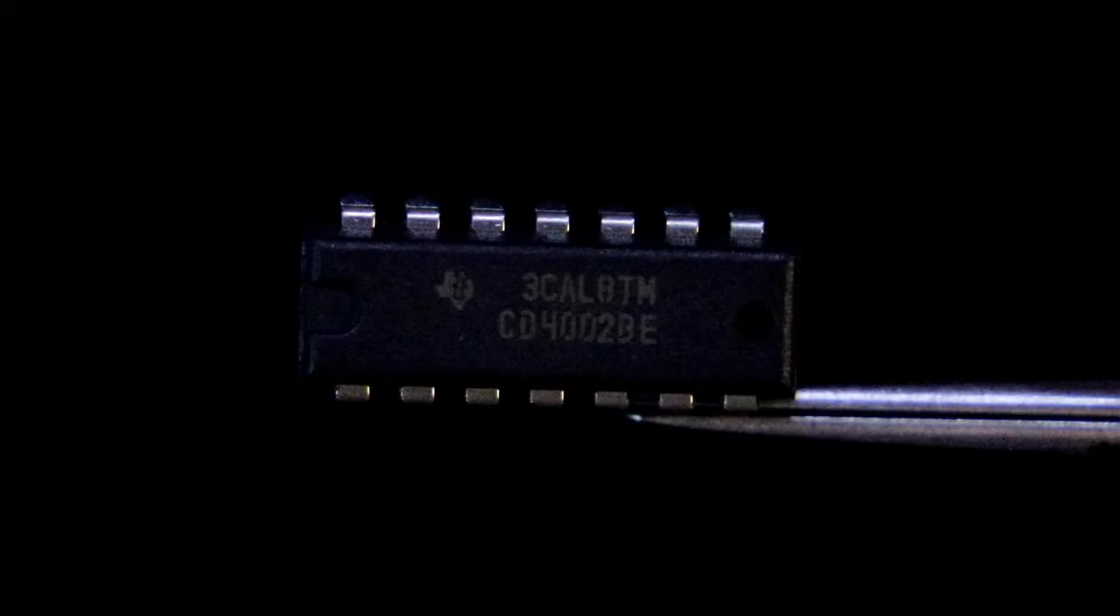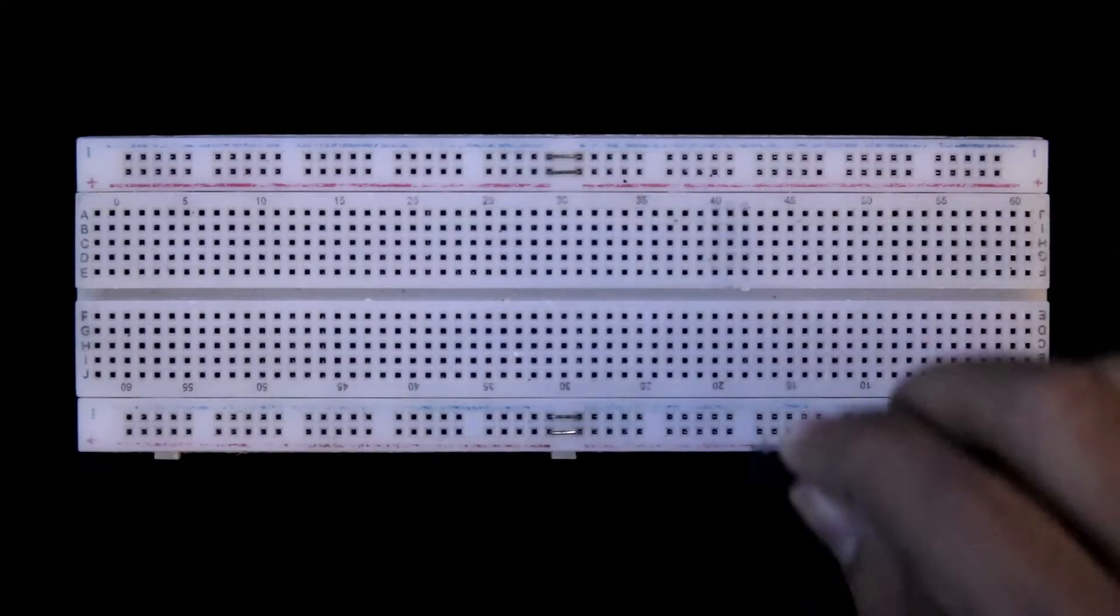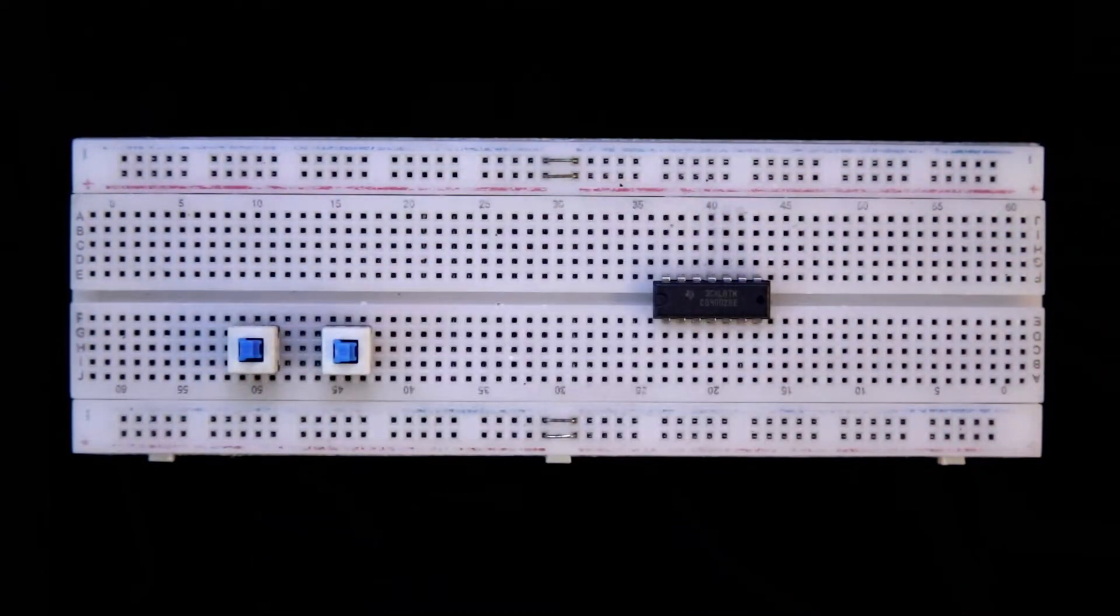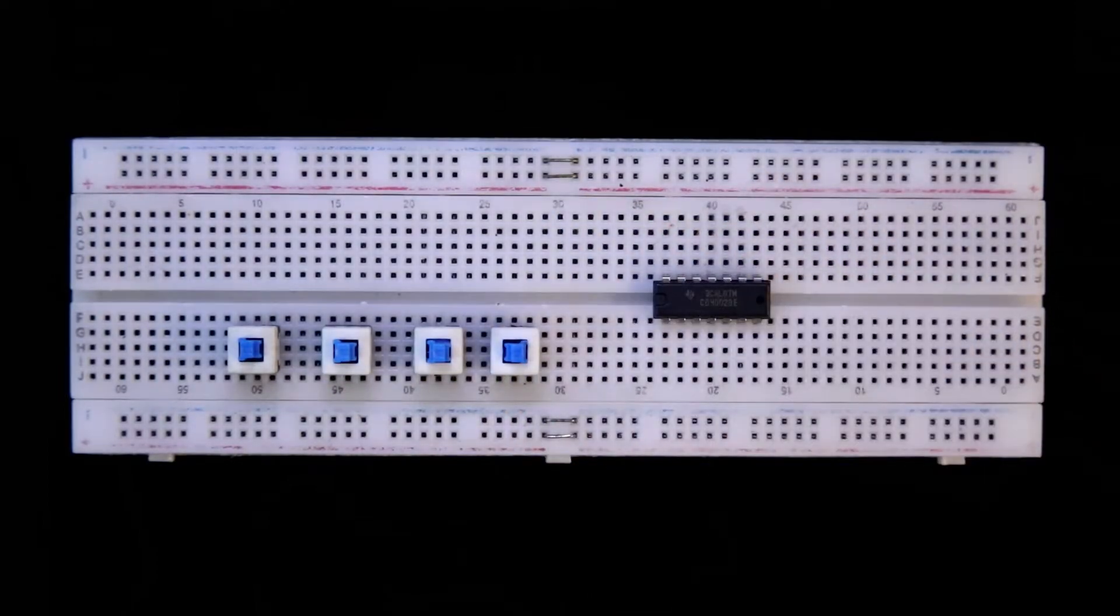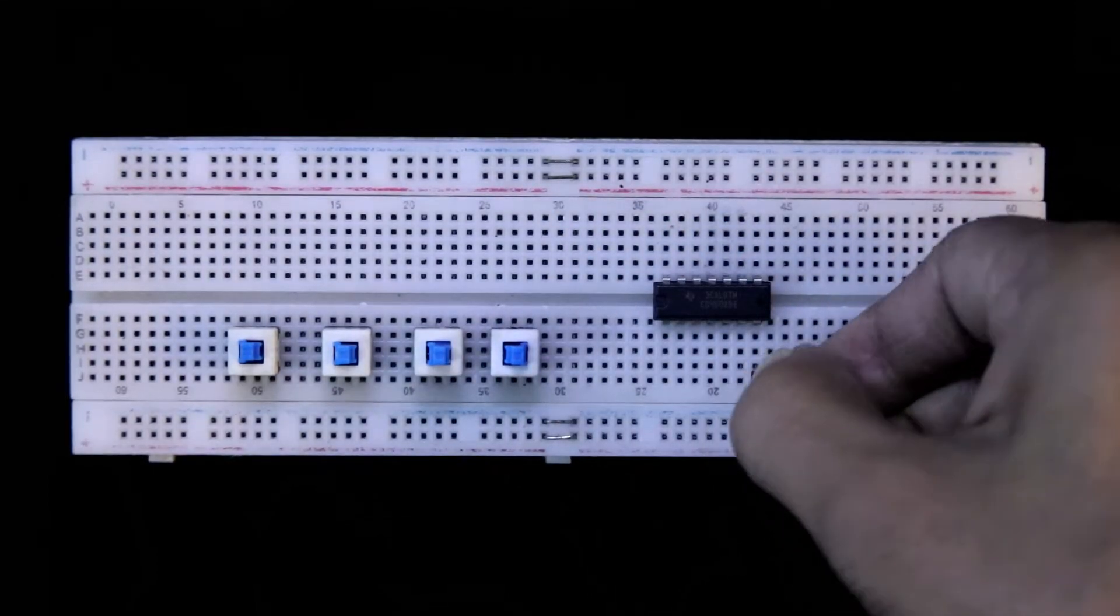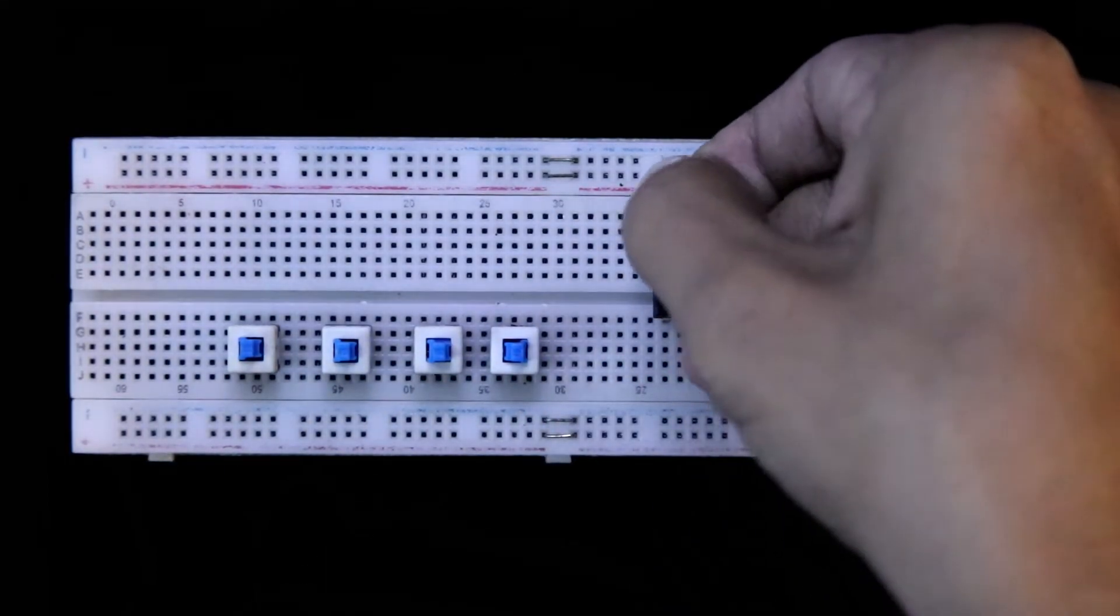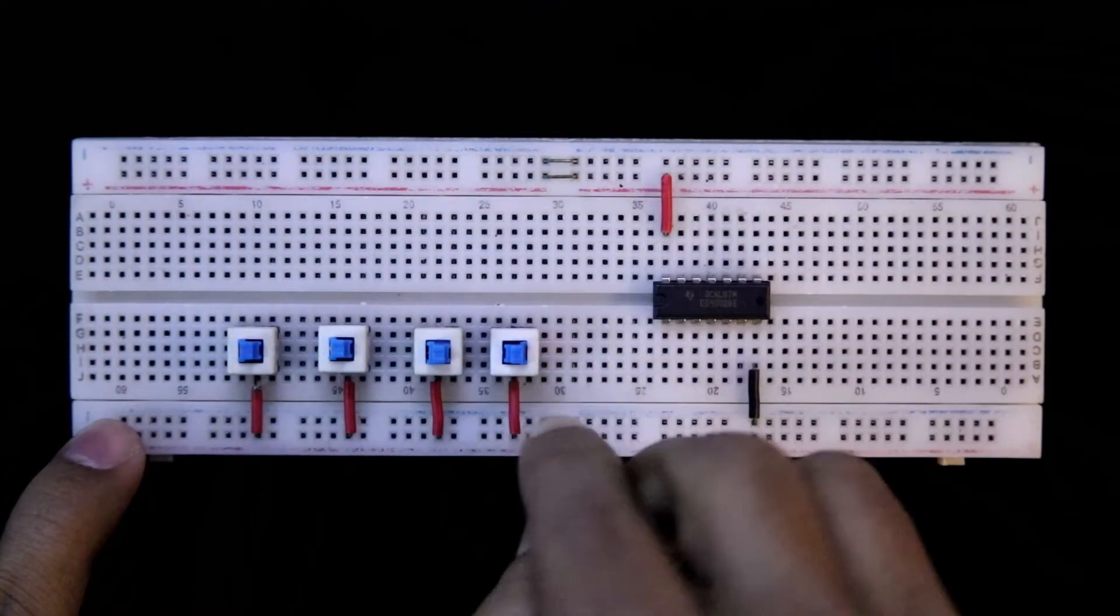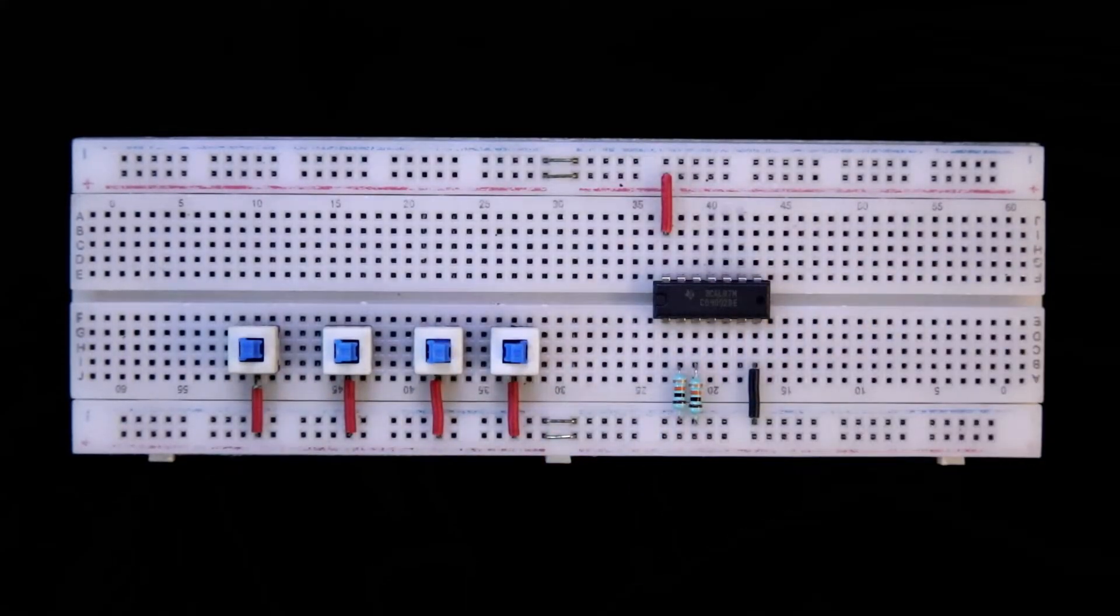This is the IC CD4002. I am putting it here. Switch A, B, C, and D. Pin number 7 is connected to ground. Pin 14 is connected to plus VCC. One pin of the switch is connected to plus VCC. Connecting the pull-down resistors to the input pins 2, 3, 4, 5.